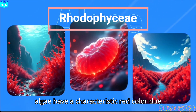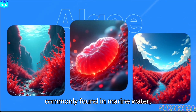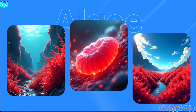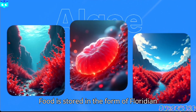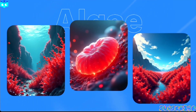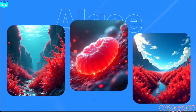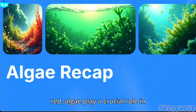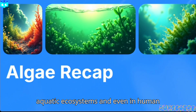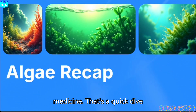Red algae (Rhodophyceae): red algae have a characteristic red color due to the pigment phycoerythrin. They are commonly found in marine water, especially in deeper regions. Food is stored in the form of floridian starch. Examples include Polysiphonia, Gelidium, and Gracilaria. Green, brown, and red algae all play a crucial role in aquatic ecosystems and in human industries like food, cosmetics, and medicine.